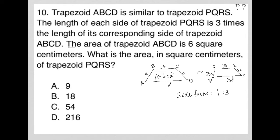For every one unit in this trapezoid, we get three times that over here. So the area, the ratio of the areas will always be the square of those. It'll be one to nine.